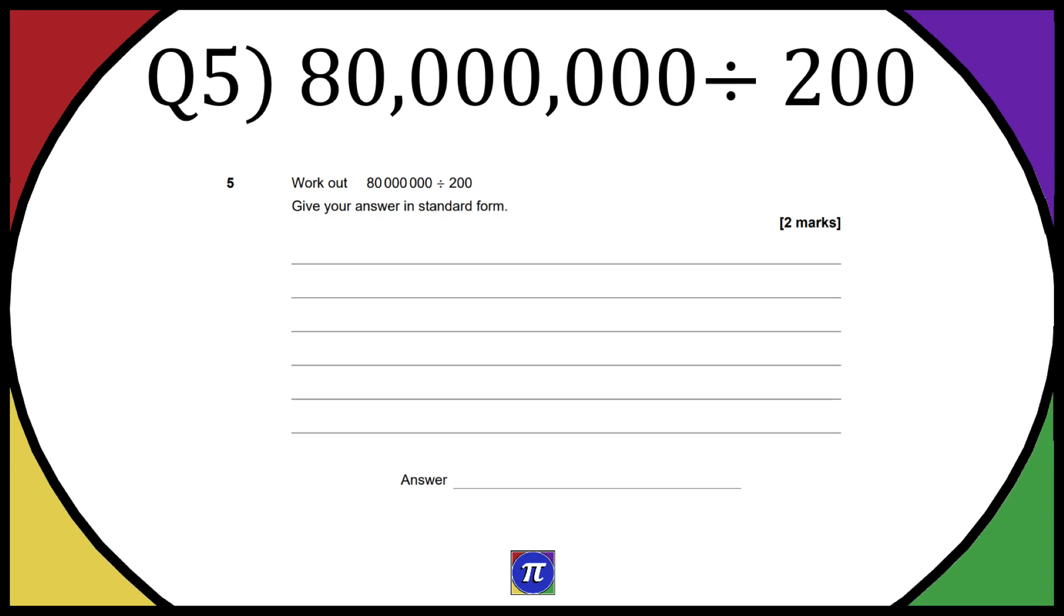The first thing I would do is work out the actual answer and then we can convert it to standard form. So let's put the 80 million here and the 200 underneath, and then from there the zeros will just cancel out.